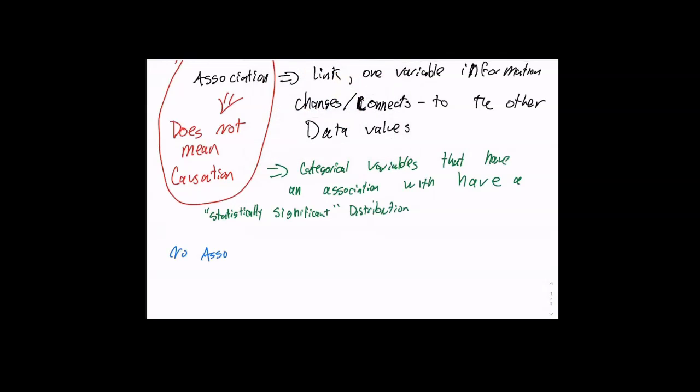We're only taking samples typically — we don't have all the information. So sometimes, instead of saying there is no association or there is an association, we say there is evidence of an association. That means it might turn out not to be true. We'll learn about this because we're just collecting some data — things may look one way but in reality be different, since we only have some data.